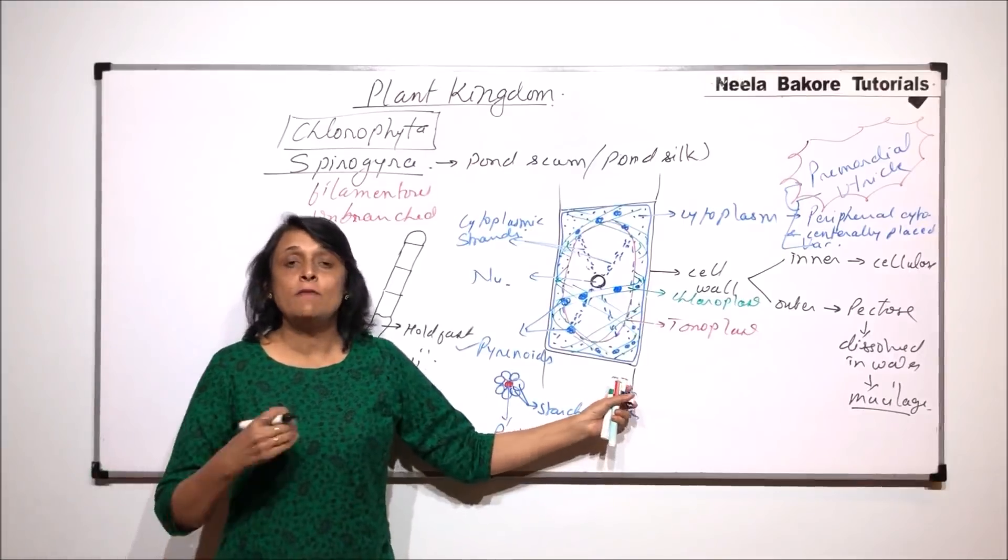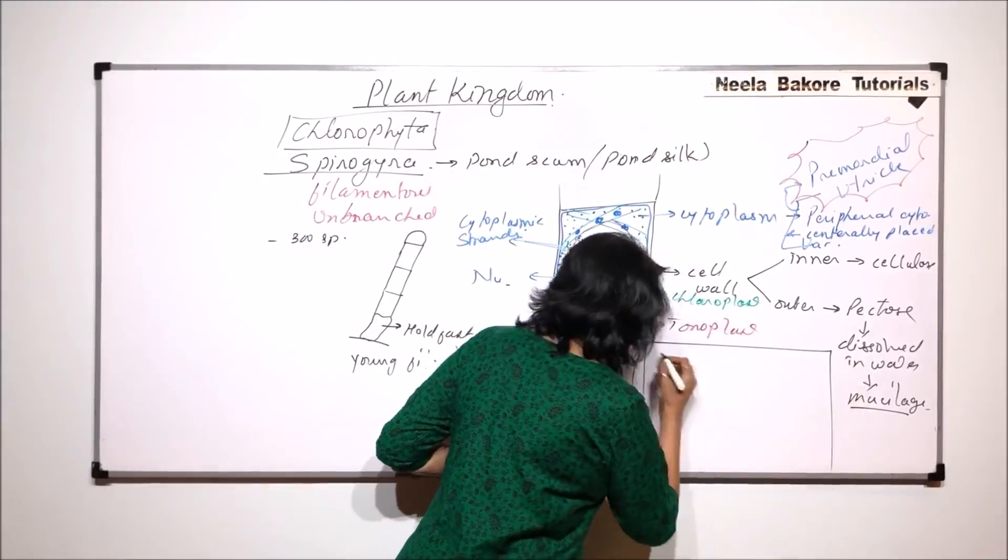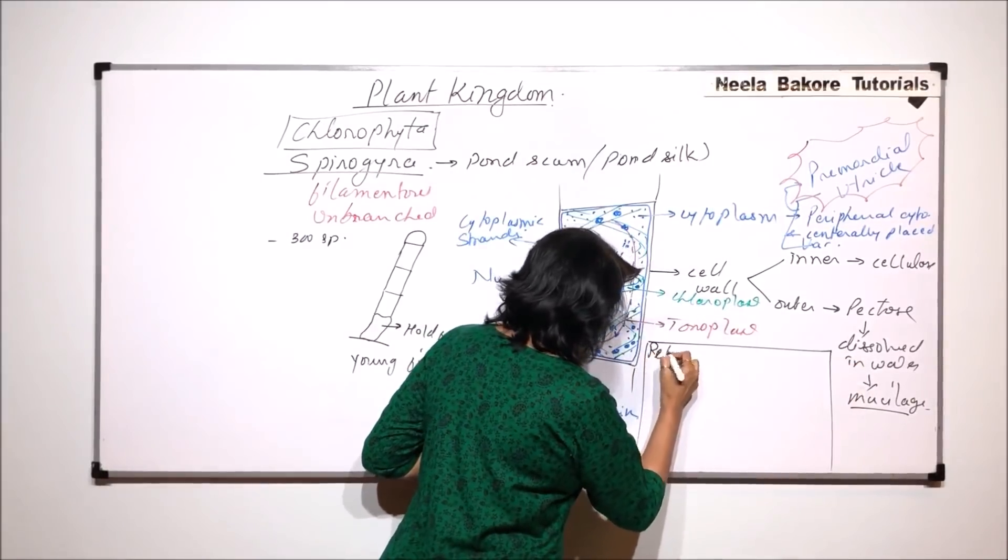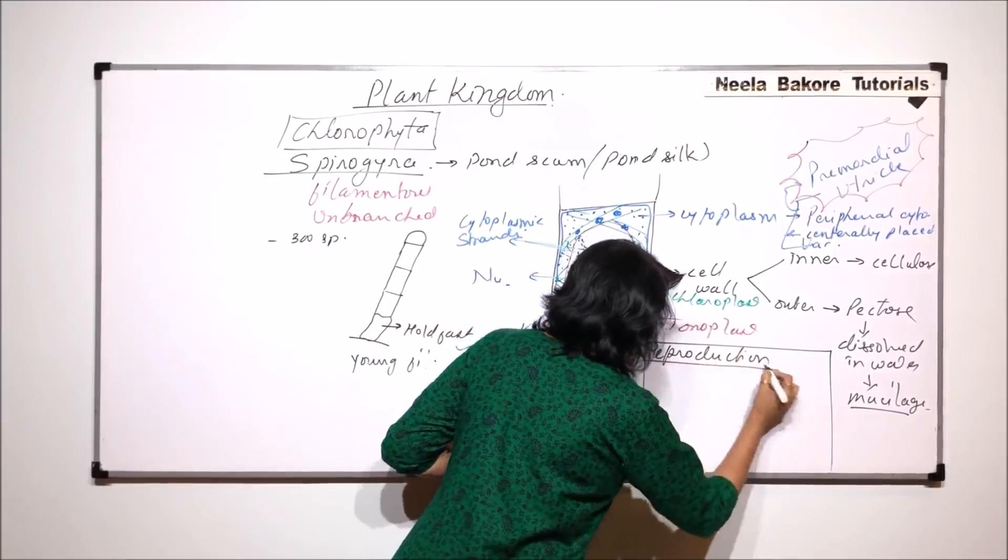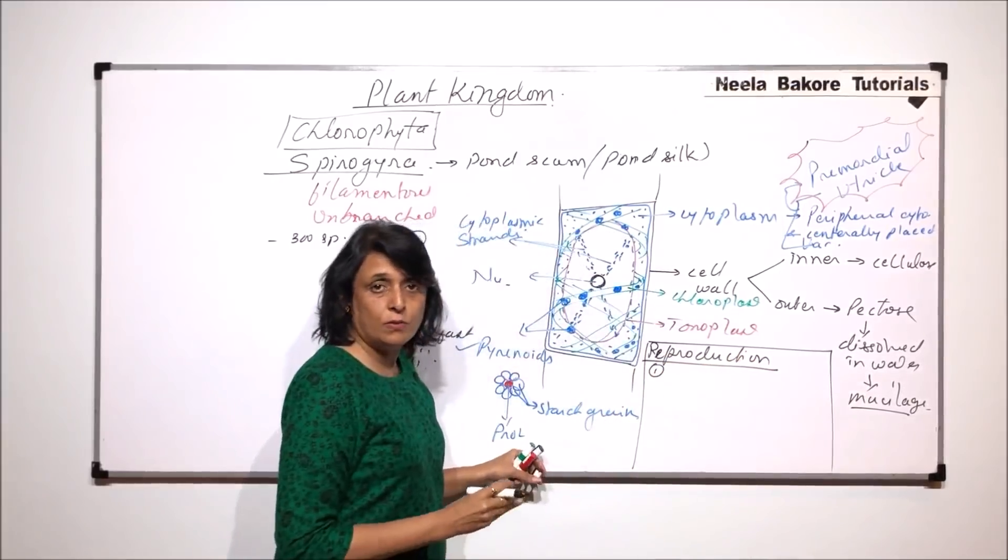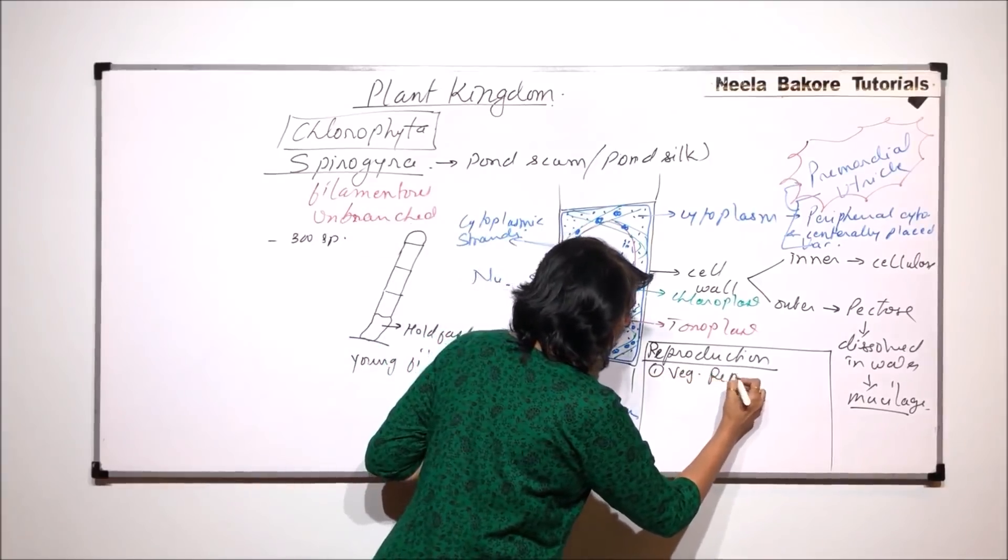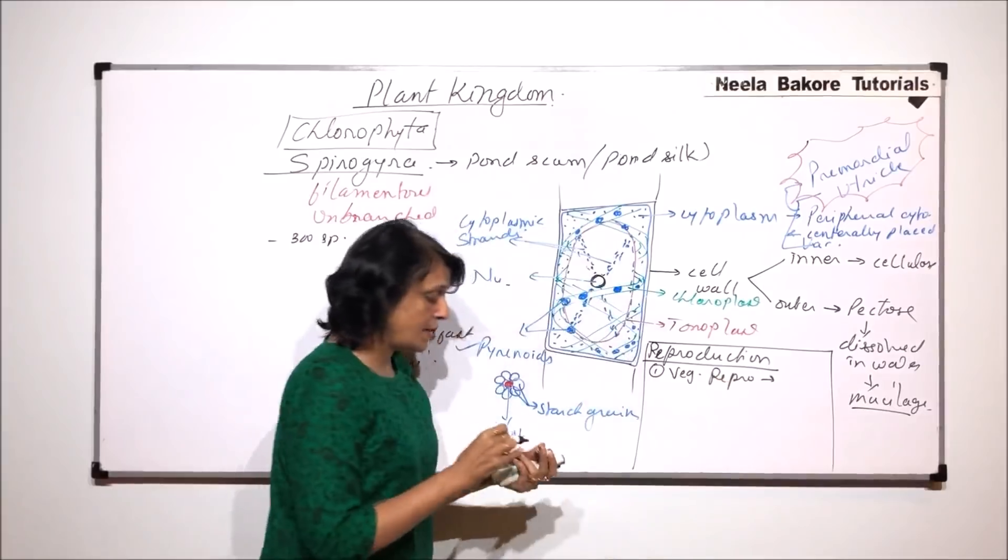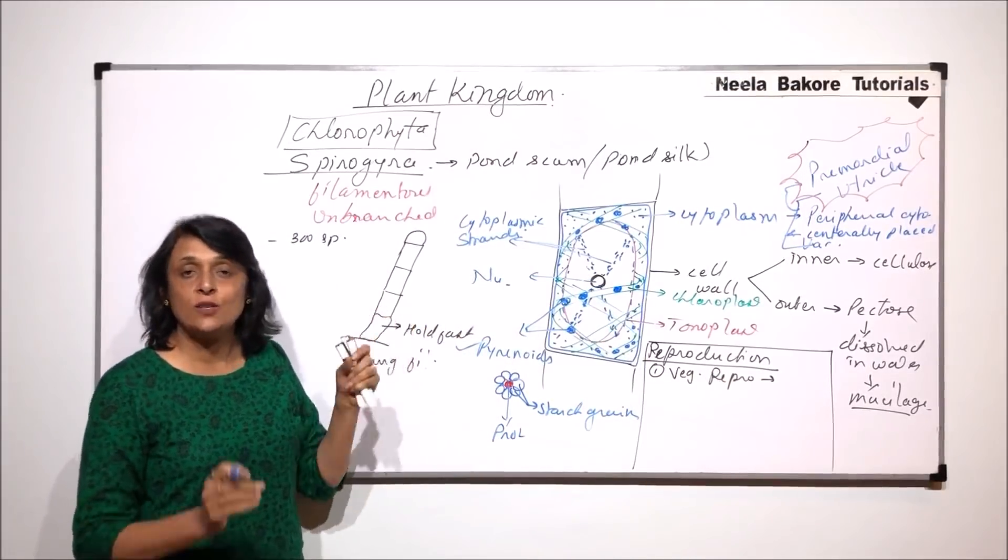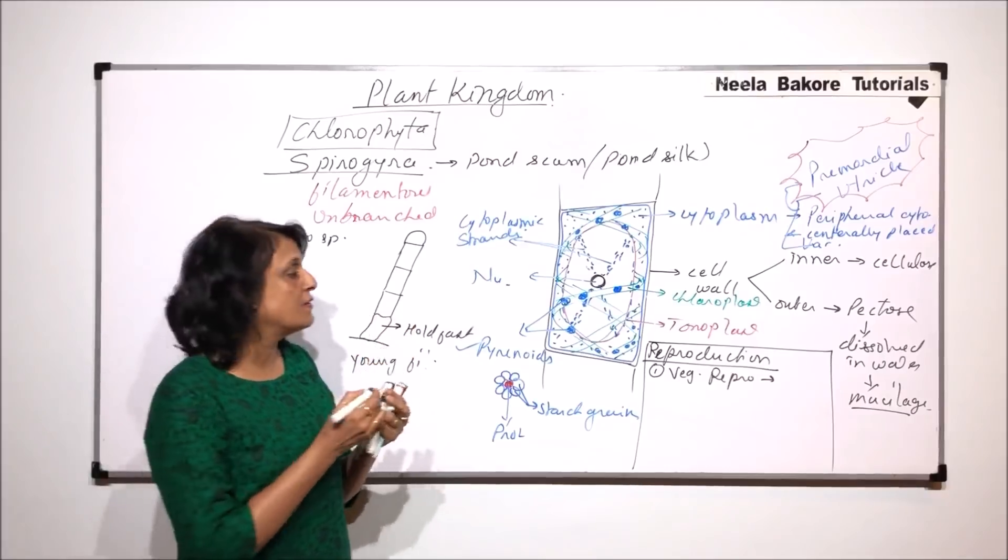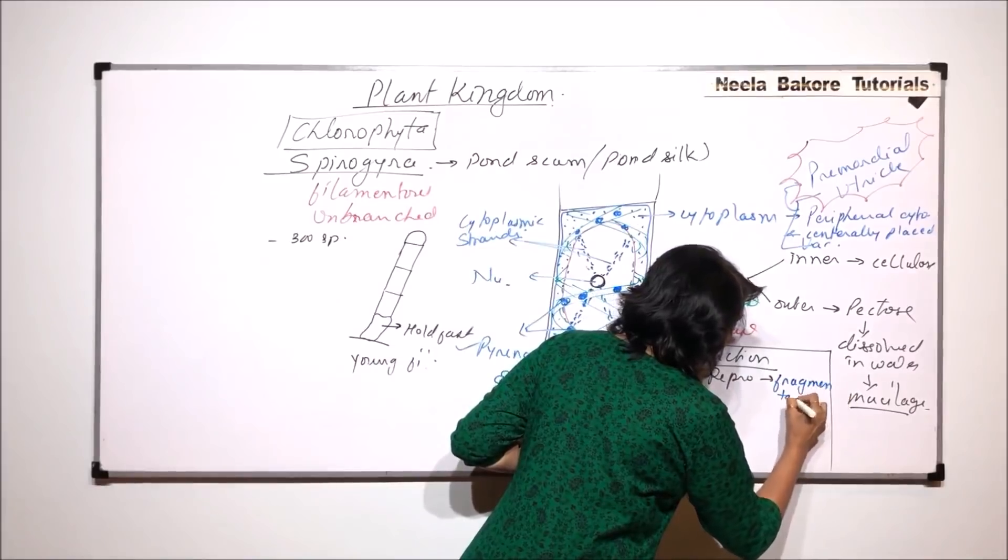Now when we talk about the reproduction part, the reproductive processes, there are three main methods which are discussed here. One is vegetative reproduction. Vegetative reproduction takes place by fragmentation. Whenever the filament breaks into parts, each fragment gives rise to a new filament.